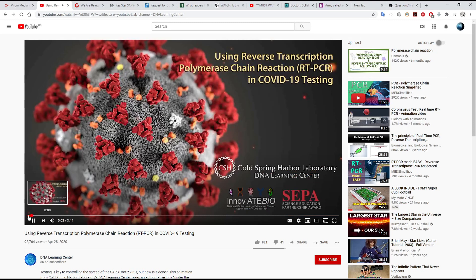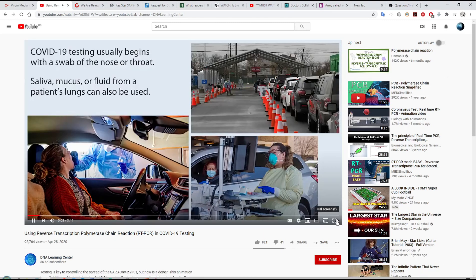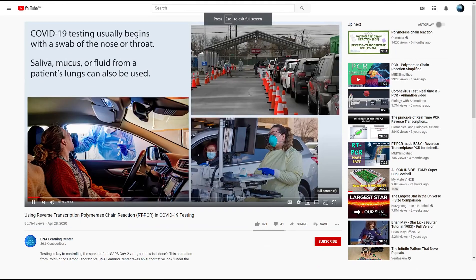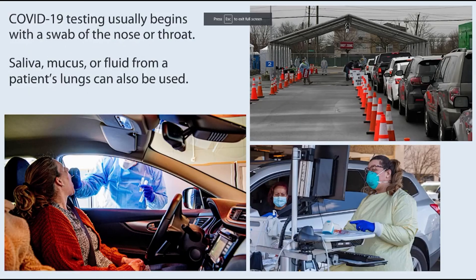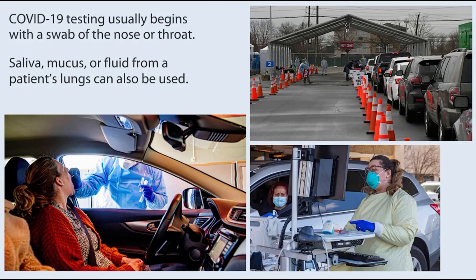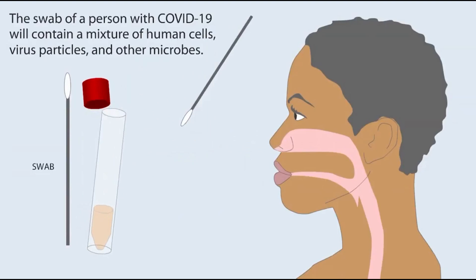Using reverse transcription polymerase chain reaction, RT-PCR, in COVID-19 testing. COVID-19 testing usually begins with a swab of the nose or throat. Saliva, mucus or fluid from a patient's lungs can also be used. The swab of a person with COVID-19 will contain a mixture of human cells, virus particles and other microbes.